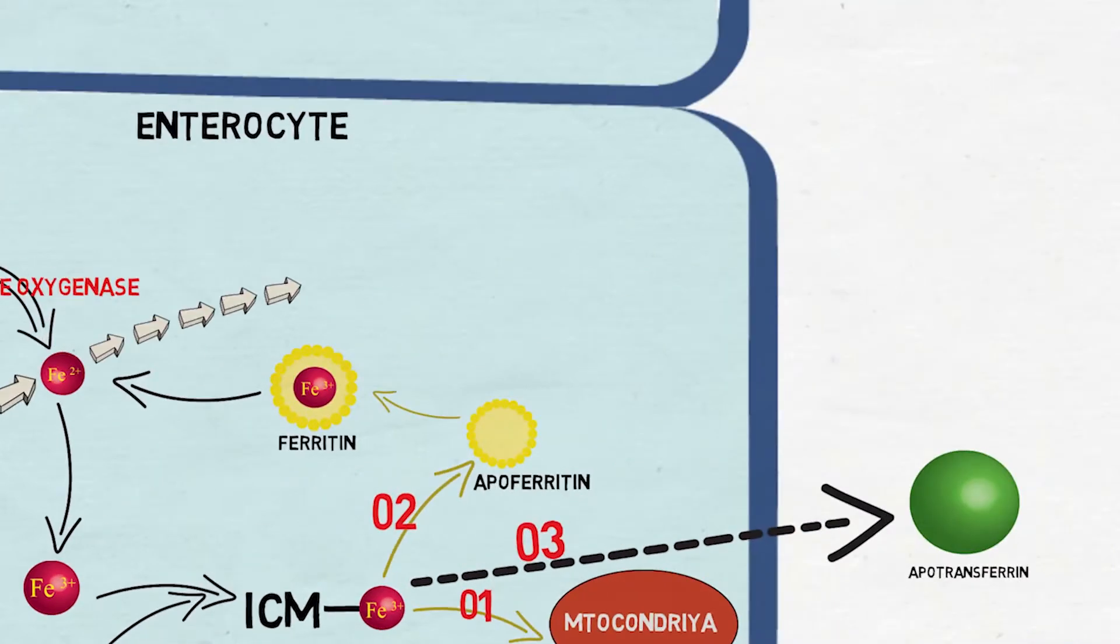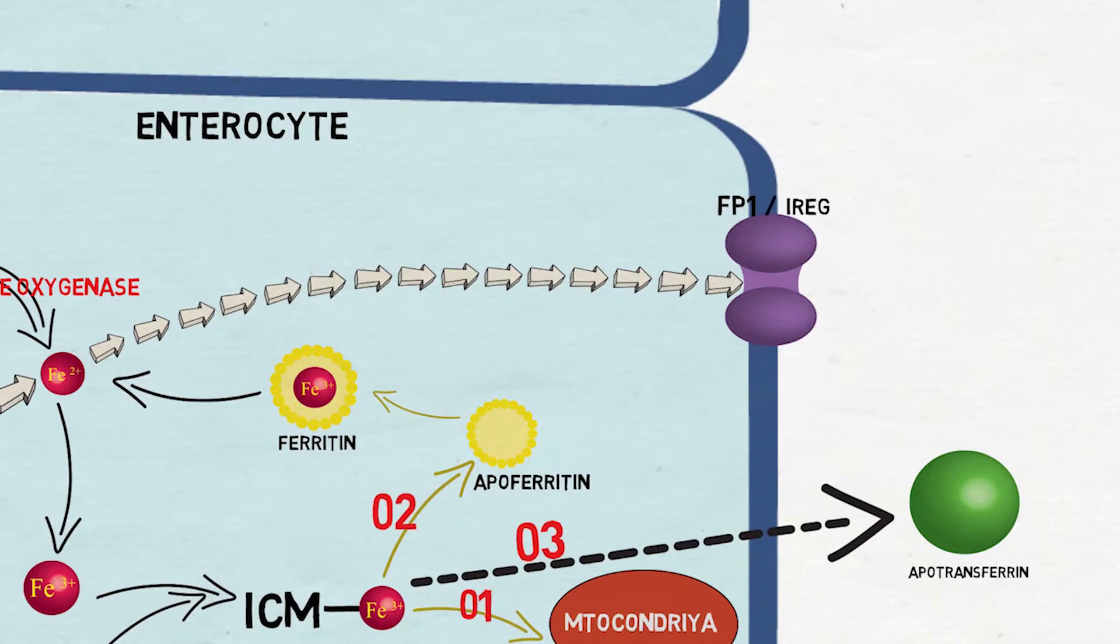Absorbed Fe2+ ion is transferred across the basolateral membrane into the bloodstream via another transporter called ferroportin, or iron regulatory transporter 1.